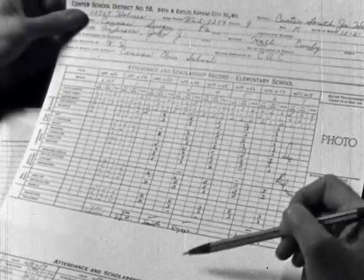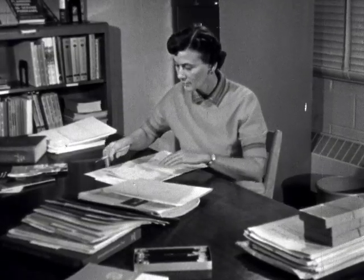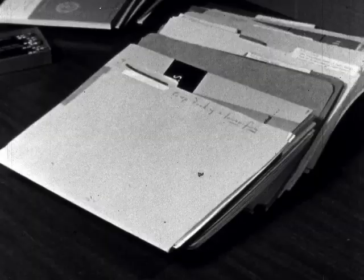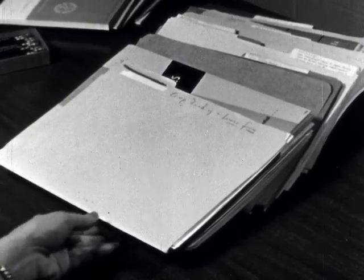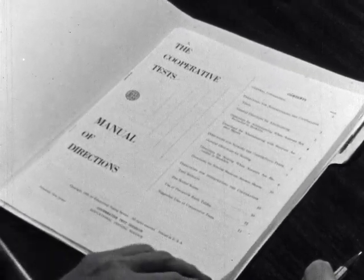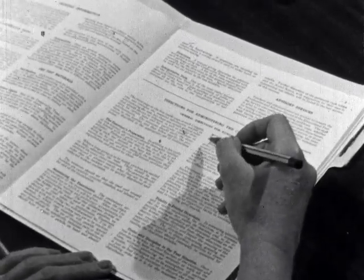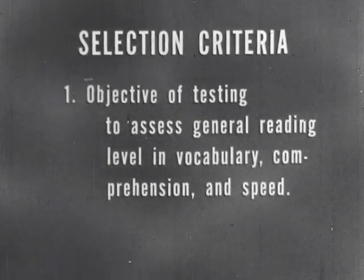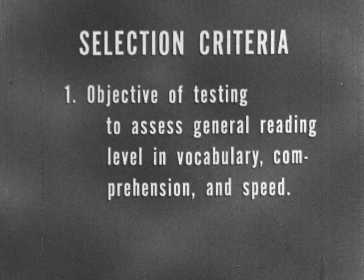A standardized test, used under controlled conditions, can help Miss Wilcox identify students with reading problems and indicate students who may need additional testing for a more thorough diagnosis of reading difficulties. A number of tests are available to her. Miss Wilcox must choose from them the one test which will best meet her objectives. As a first step in selection, Miss Wilcox defines her objective in testing — just what is it that she needs to know about her students' reading ability?